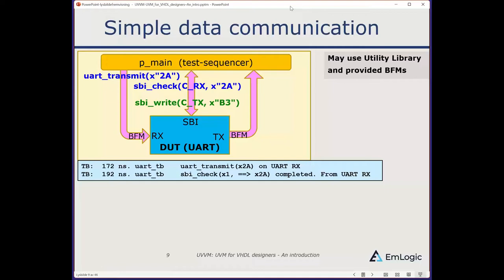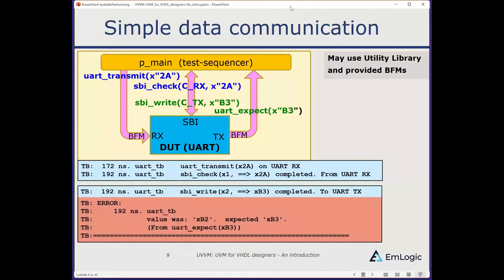On the Tx side, I can do an SBI Write to the Tx register inside the UART, and sometime later that will appear on the Tx output where I do a UART Expect to wait for and check the output value 0xB3. In this example the SBI Write is fine, but the value going out of the UART is failing — so you get a mismatch report with an error, a timestamp, the scope (UART testbench), and details showing the received versus expected value.